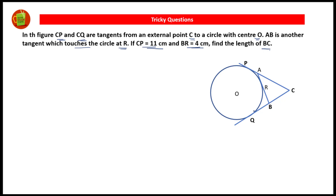CP and CQ are the two tangents drawn to the circle with center O from the exterior point C. It is given that CP is equal to 11 centimeters and BR is given as 4 centimeters. We have to find the length of BC.